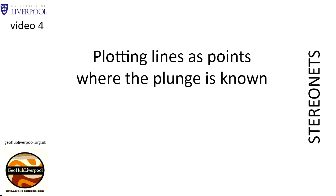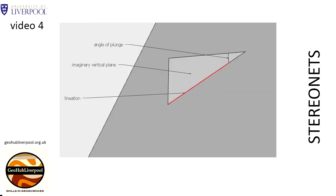This clip shows how to plot lines as points where the plunge of the line is known. Lines or lineations could be linear structural features like a fold axis, crests of ripples, or a preferred orientation of elongate minerals. The plunge is a line's angle of tilt away from the horizontal, measured in an imaginary vertical plane.